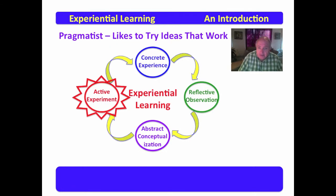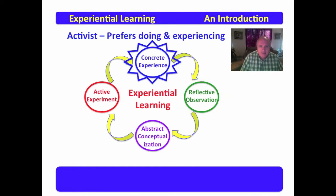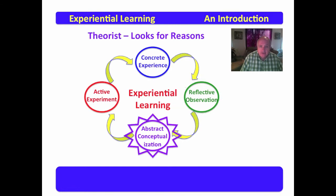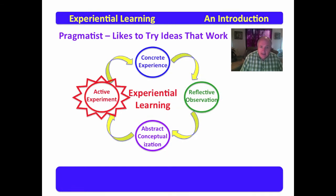Then we move to the pragmatist, who likes to try ideas that work — active experimentation. So we have four types of learners: activist, reflectors, theorist, and the pragmatist.